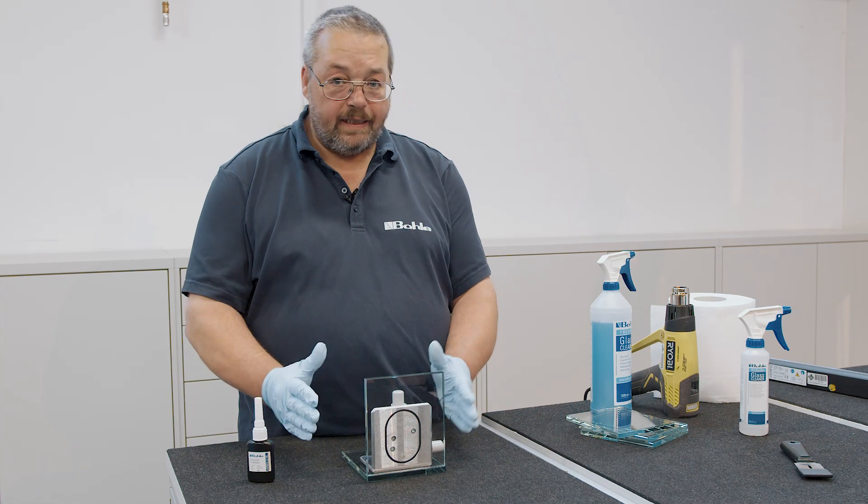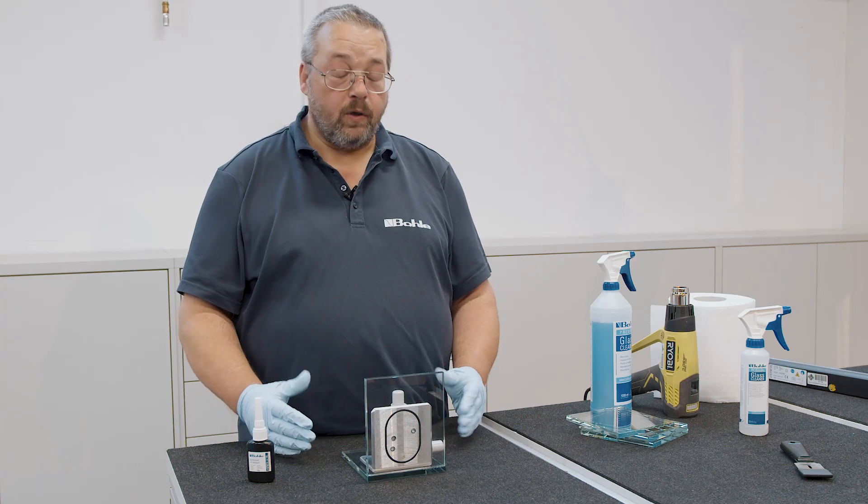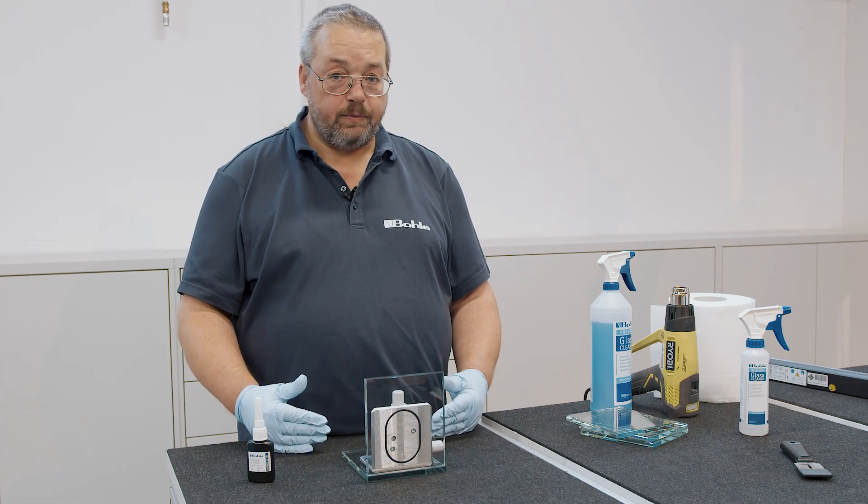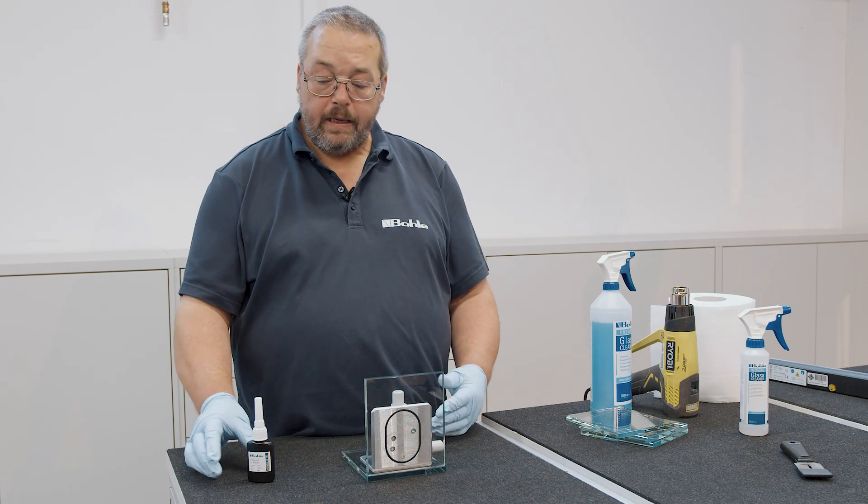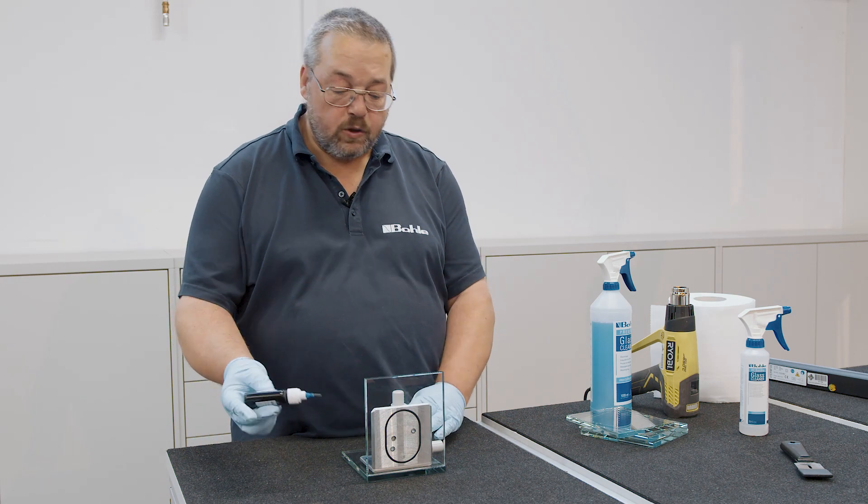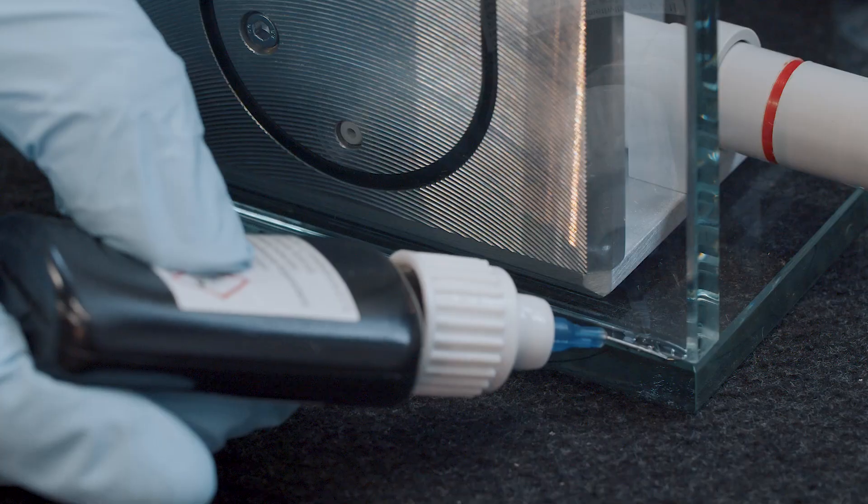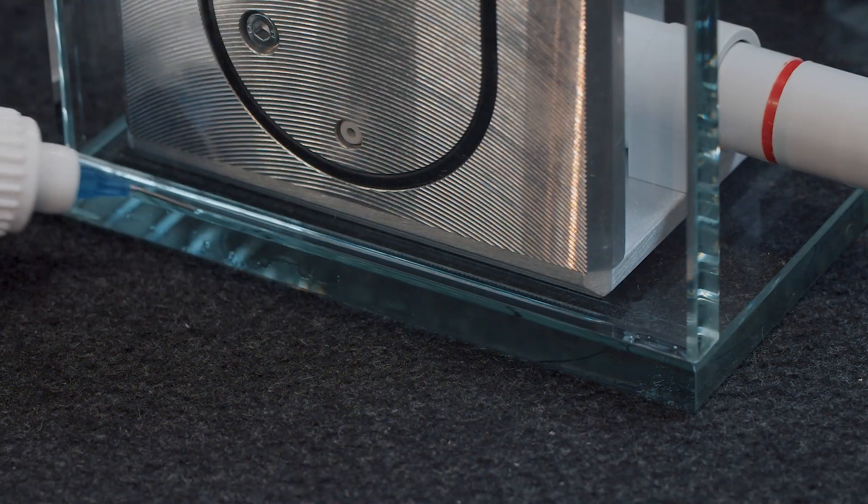If I see that the adhesive slightly withdraws from one end or the other, I know that I have applied too little adhesive between my bonding parts. That means that I'll have to top up the adhesive layer. We do this in the same way as before.